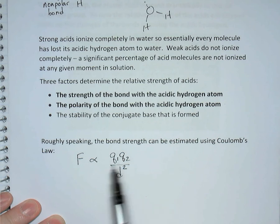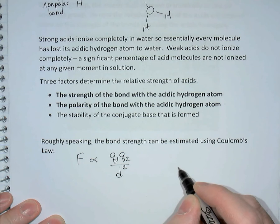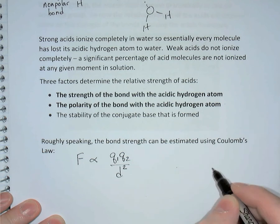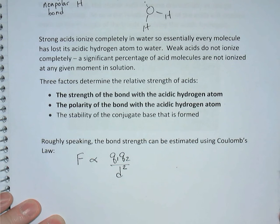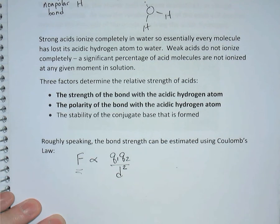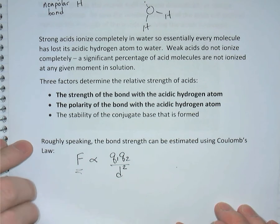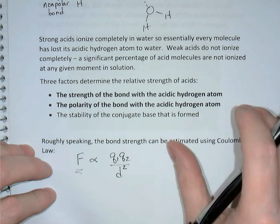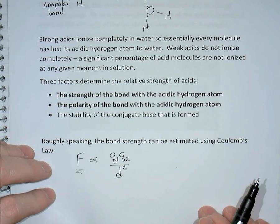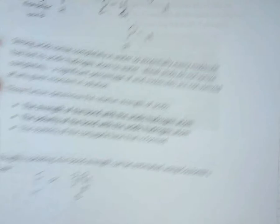When the charges are greater, the force is greater. When the distance is greater, the force is weaker. In a chemical bond, the nucleus of one atom is attracted to the shared electrons, and the nucleus of the other atom is attracted to the shared electrons as well. If the distance between the nucleus and those shared electrons gets larger, the force of attraction will get smaller — the bond will get weaker. So the greater the distance between the nucleus and those shared electrons, the weaker the bond. Coulomb's law can help us estimate the strength of a bond.